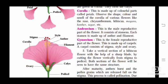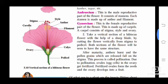Androecium: This is the male reproductive part of the flower. It consists of stamens. Each stamen is made up of anther and filament. You can see in the hibiscus flower, small yellow colored dots - that is the anther.